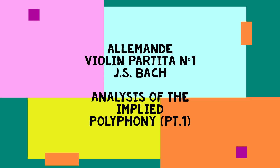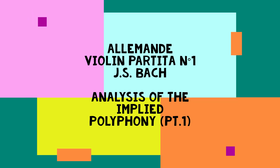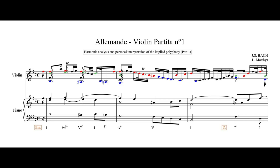Hello and welcome to this harmonic analysis and personal interpretation of the implied polyphony in the first part of the Allemande of the B minor violin partita number one of Johann Sebastian Bach. This is a very interesting piece because Bach almost constantly, almost systematically, implies three distinct melodic lines simultaneously.